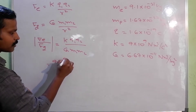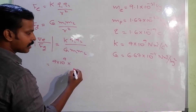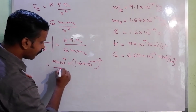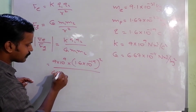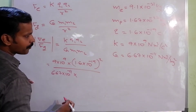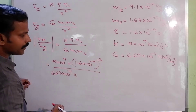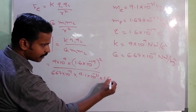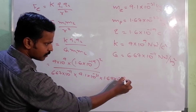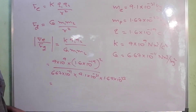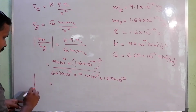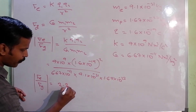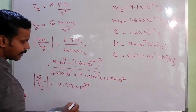K value: 9 into 10 raise to 9, into Q1 Q2 — charge is the same — 1.6 into 10 raise to minus 19, squared. Divided by G value: 6.67 into 10 raise to minus 11, into mass of electron 9.1 into 10 raise to minus 31, into mass of proton 1.67 into 10 raise to minus 27. The result is F_e by F_G is equal to 2.27 into 10 raise to 39.